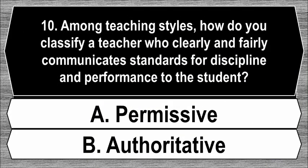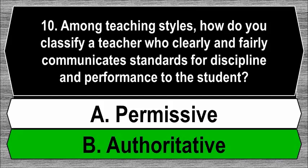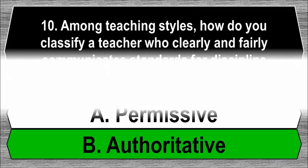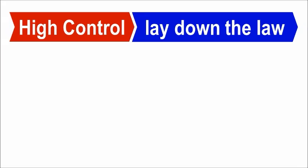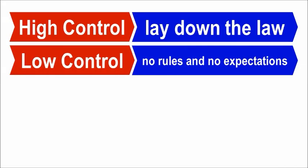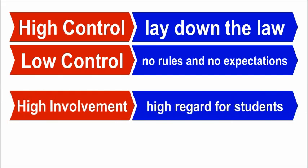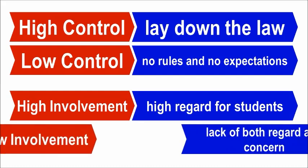Question 10. Among teaching styles, how do you classify a teacher who clearly and fairly communicates standards for discipline and performance to the student? A. Permissive. B. Authoritative. The best answer is B, authoritative. Classroom management styles of teachers can be characterized along two dimensions: the type of control exercised over students and the degree of involvement of teachers with students. High control means teachers explicitly lay down the law and strictly enforce it, while low control means no rules or expectations.